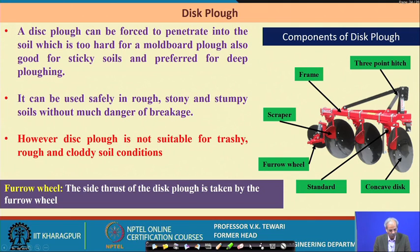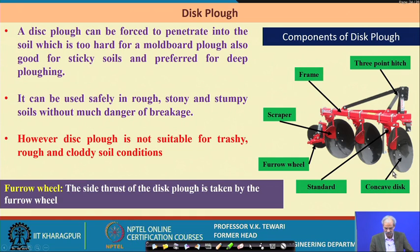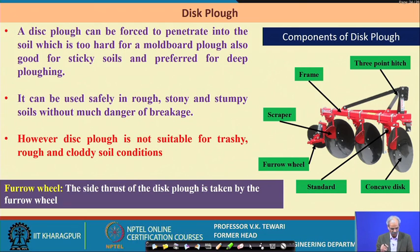The disc plough has already been discussed in the field. Here we can see its different components: the 3-point hitch, the frame, the scraper, the furrow wheel, the standard, and the concave disc. The concave disc is chamfered so that it cuts the soil effectively.